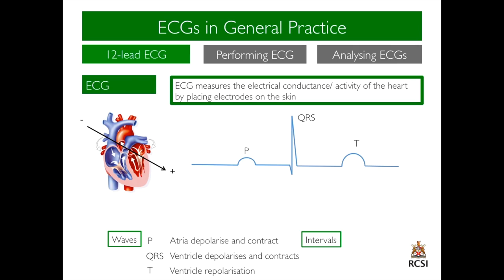Between the waves are intervals. The first interval, outlined above, is the PR interval. It represents the delay in conduction between the atria and ventricles because of the AV node. The second interval, outlined above, is the QT interval.